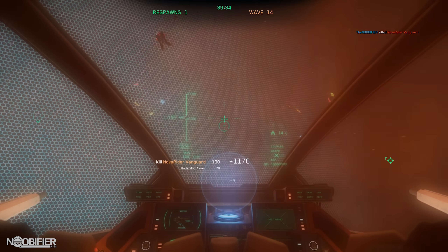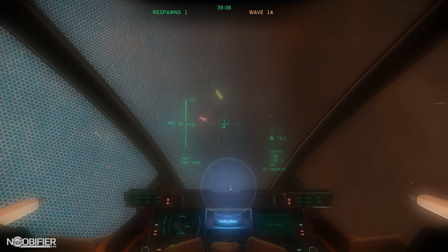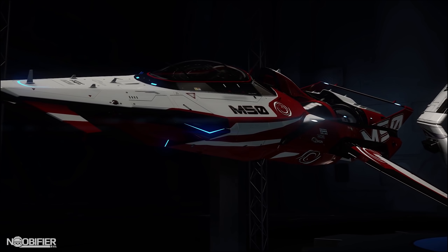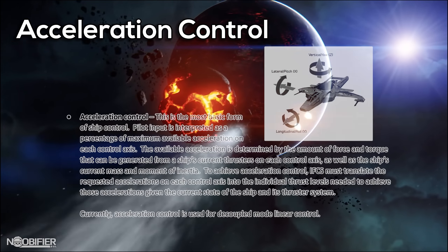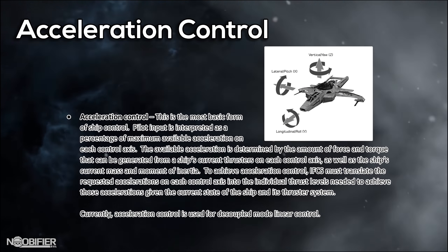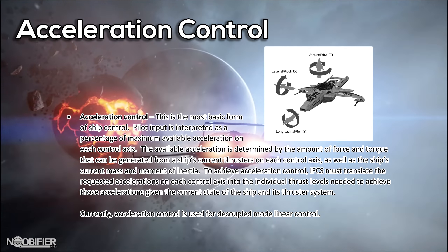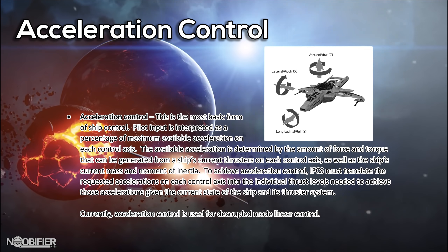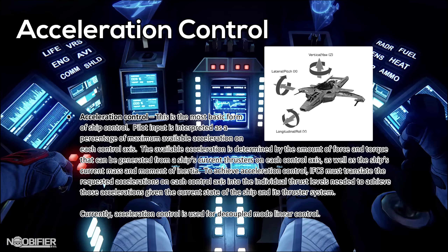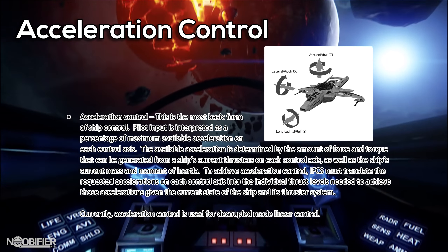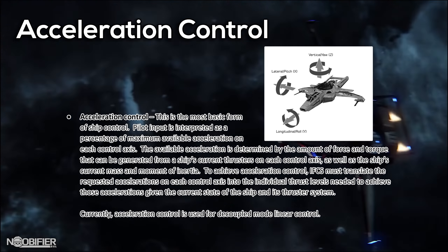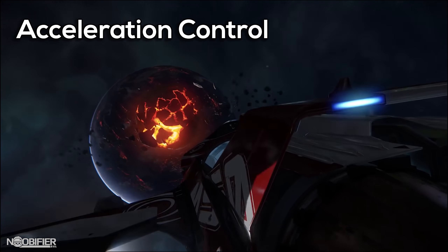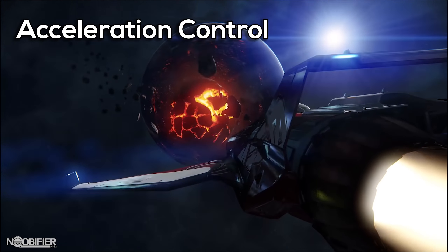As a pilot, it might be unreasonable to control each thruster independently, so IFCS is a full set of codependent control systems working together. Acceleration control is the most basic form of ship control. Pilot input is interpreted as a percentage of the maximum available acceleration on each control axis. The available acceleration is determined by the collective pool and then considered against the ship's current mass and moment of inertia. Currently, acceleration control is used for decoupled mode linear control.